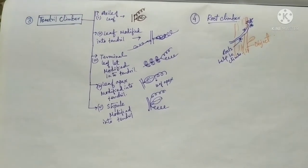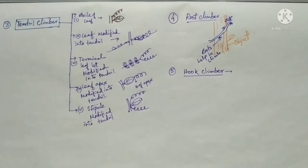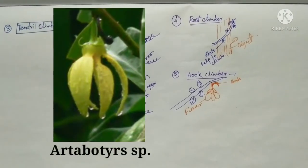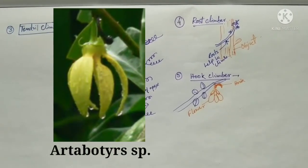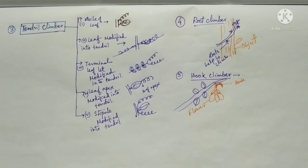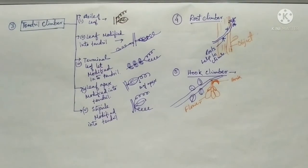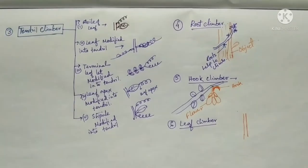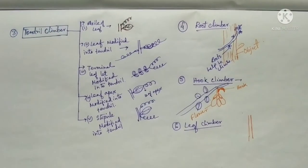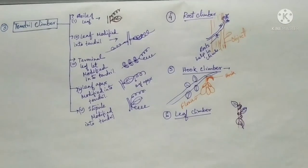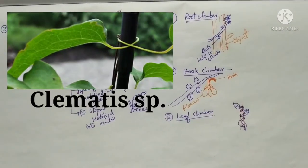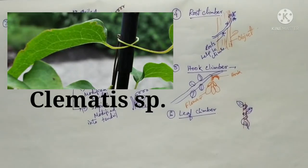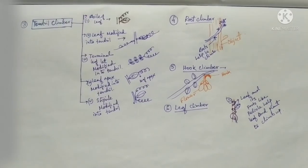The next type is hook climber, where the flower stalk contains a hook-like structure which helps the plant to climb. Next is leaf climber. When the leaf and its petiole — or the total leaf — help to climb up a plant, it is known as a leaf climber. Here the leaf part is converted into a climbing organ.